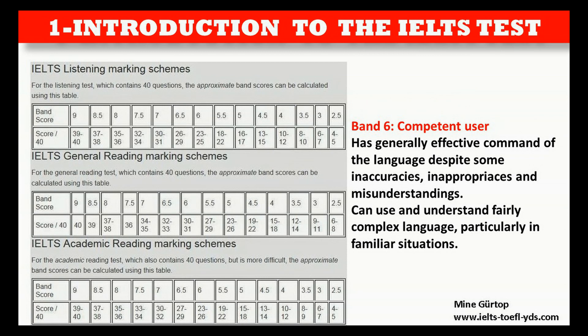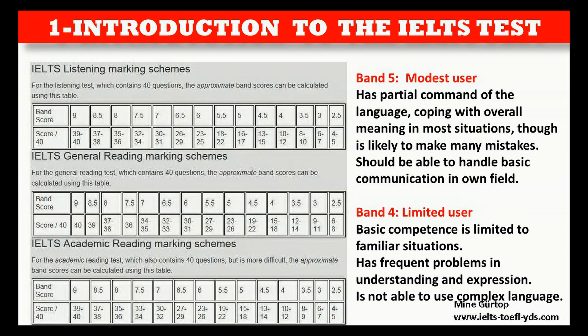Band 6 — Competent User: Has generally effective command of the language despite some inaccuracies, inappropriacies, and misunderstandings; can use and understand fairly complex language, particularly in familiar situations. Band 5 — Modest User: Has partial command of the language, coping with overall meaning in most situations, though is likely to make many mistakes; should be able to handle basic communication in own field. Band 4 — Limited User: Basic competence is limited to familiar situations; has frequent problems in understanding and expression; is not able to use complex language.